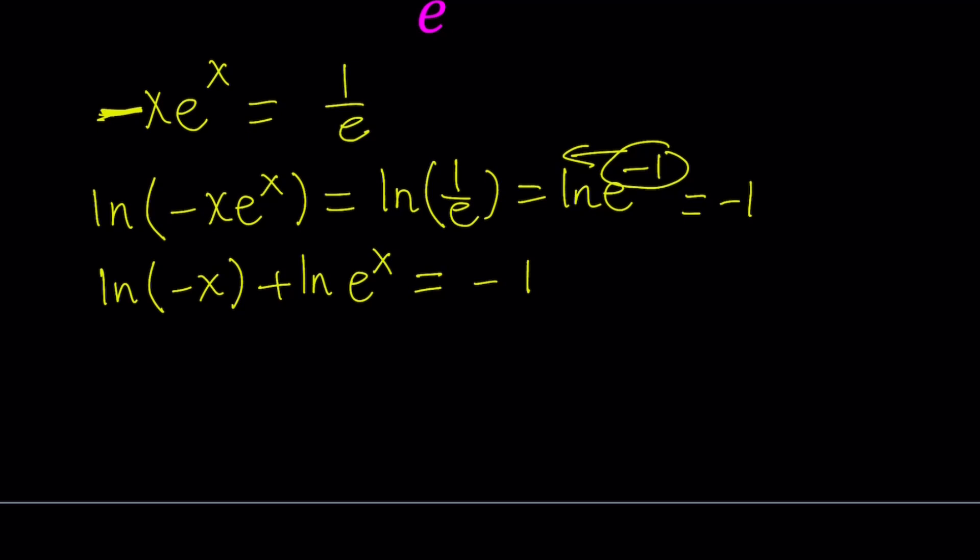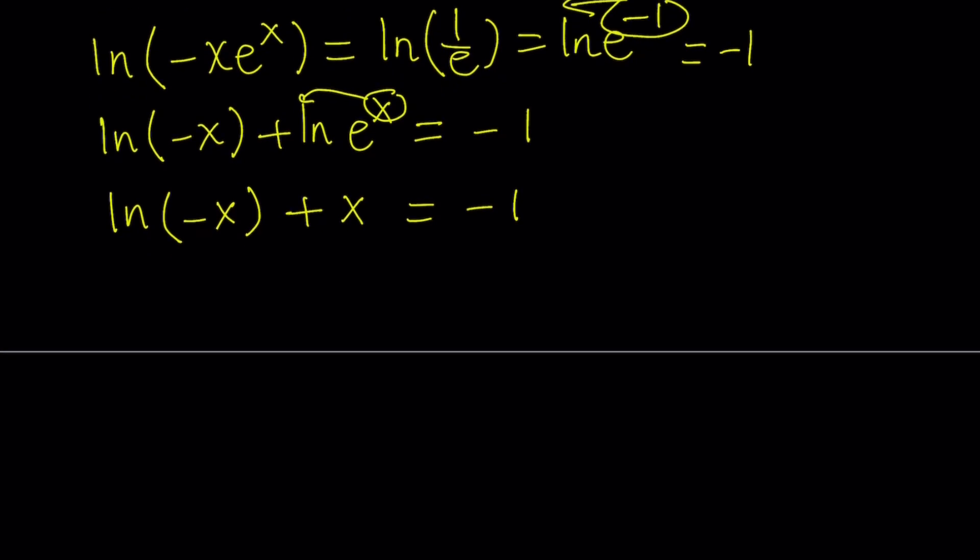So can we simplify this further? We have ln of negative x. We can't really do anything right now, but notice ln is defined for positives. And in this case, x is negative. So it's all good. ln e to the power x. We can move the x to the front. Or if you already know, e to the power x and ln x are inverse functions over a certain domain. And so their composition will be the identity, which is x. So this is going to become x. Now, we can go ahead and solve this, but let's make it a little nicer looking by getting rid of the negative x. You definitely don't want that.